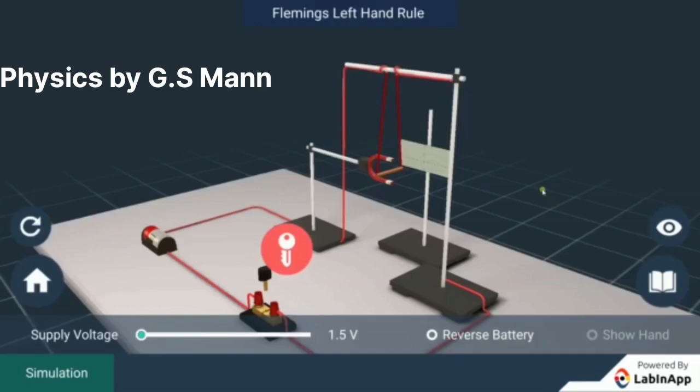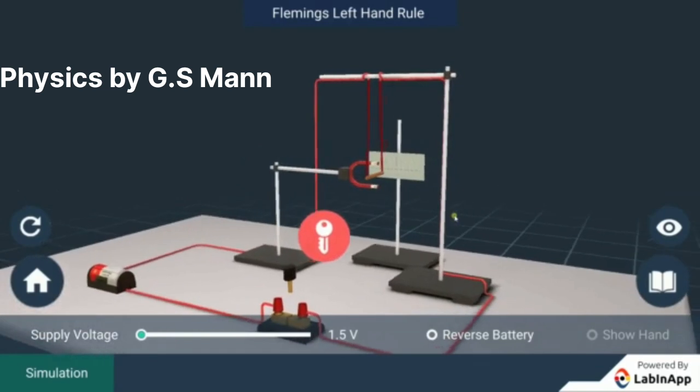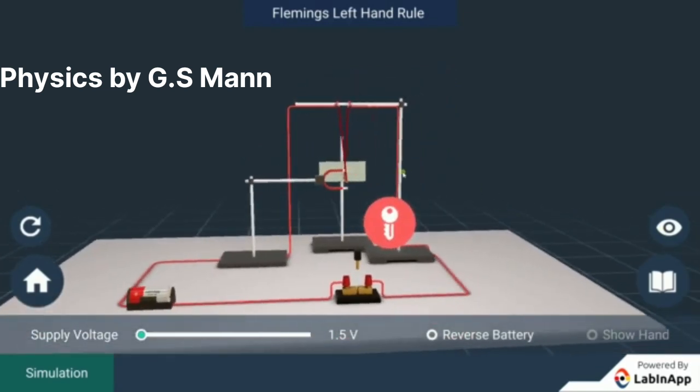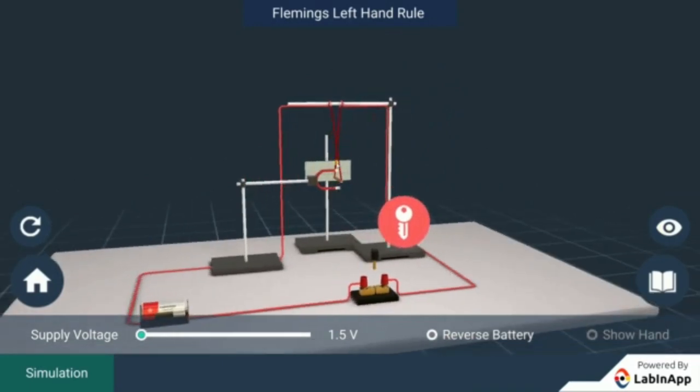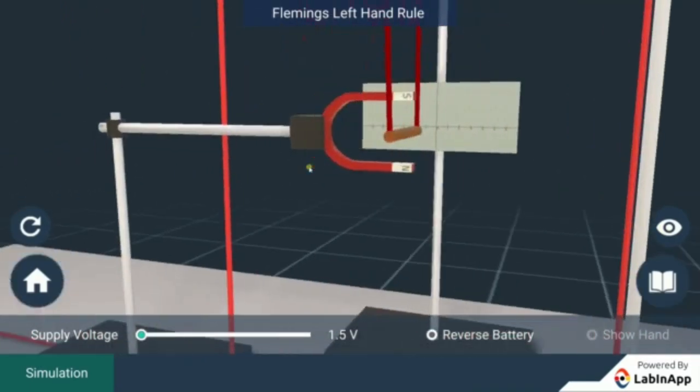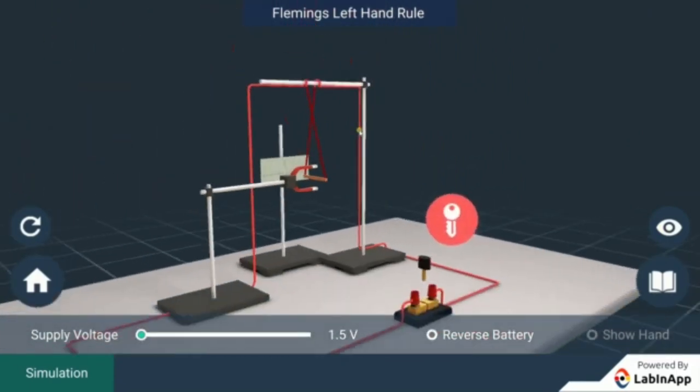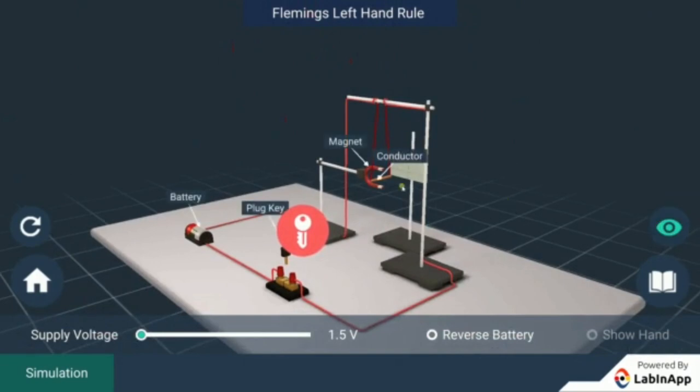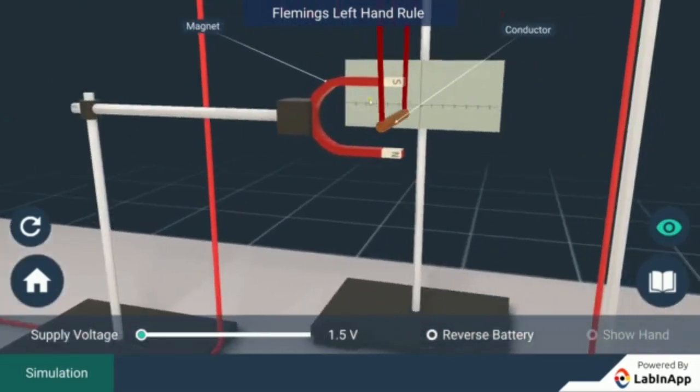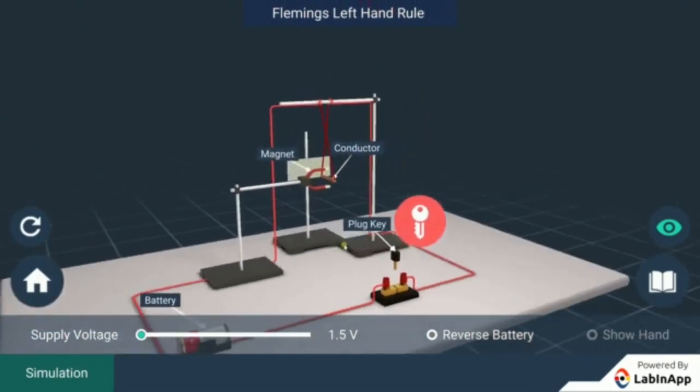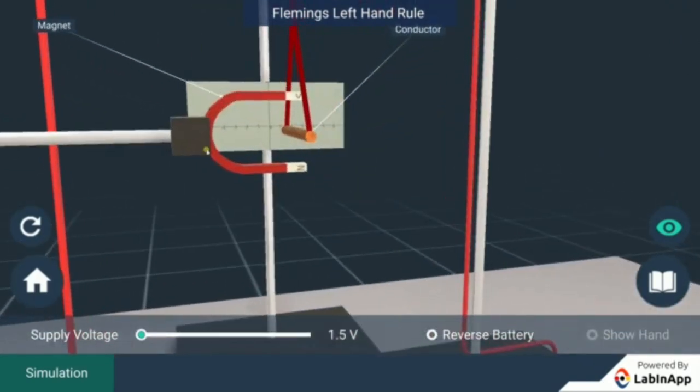Now here I am representing a 3D model of force acting on a current carrying wire. Here you can find there is a small piece of wire surrounded by a horseshoe magnet. Here is the experimental setup - you can see the conductor, magnet, plug key, and battery.